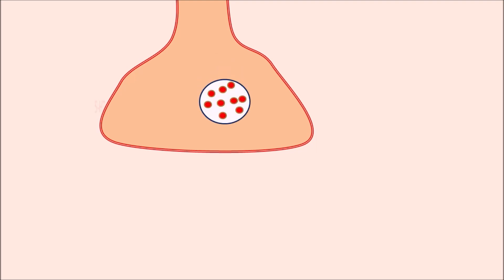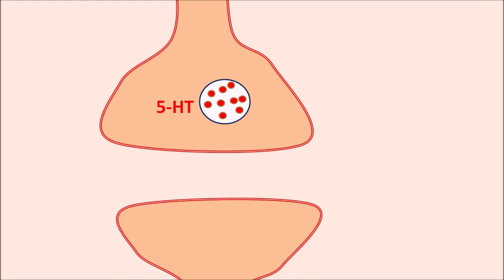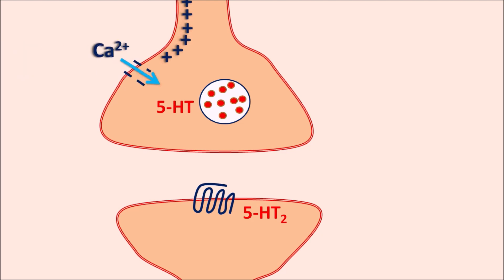How does it act? Escitalopram acts by inhibition of serotonin reuptake. The presynaptic neuron stores 5-HT, and the postsynaptic neuron is equipped with postsynaptic receptors such as 5-HT2 receptors. When an action potential reaches the presynaptic neuron, calcium enters the nerve terminals, resulting in calcium-mediated exocytosis and release of serotonin. This serotonin binds to 5-HT2 receptors, producing postsynaptic stimulation. The postsynaptic action depends on the 5-HT levels within the synaptic cleft.